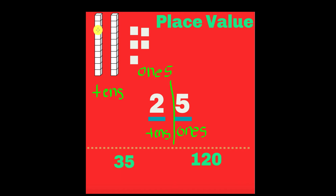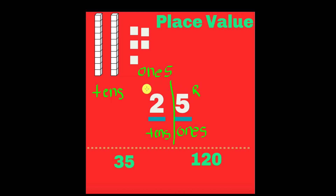So if we looked at the picture, we would say 10, 20, 21, 22, 23, 24, 25. That's how we know this number is 25 — visually using manipulatives — and with the place value, the five is the ones and the two is the tens. Now we know that with two-digit numbers, the digit farthest to the right is the ones place, and the number on the left is the tens place.